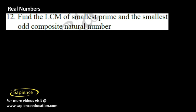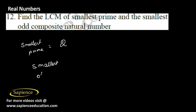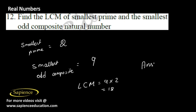Find the LCM of the smallest prime number and the smallest odd composite natural number. The smallest prime number is 2, and the smallest odd composite number is 9. LCM of 9 and 2 equals 9 into 2 which is 18. The answer is 18.